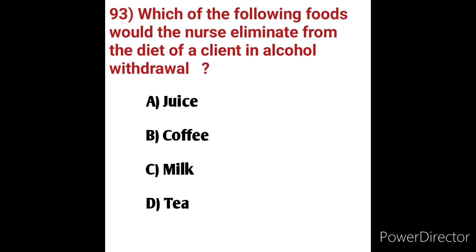Question 93: Which food would the nurse eliminate from the diet of a client in alcohol withdrawal? Options: A) juice, B) coffee, C) milk, D) tea. When alcohol is mixed with caffeine, caffeine can mask the depressive effects of alcohol. Regular coffee contains caffeine which acts as a psychomotor stimulant, leading to anxiety, agitation, tremors, and weakness. Option B, coffee, should be eliminated — it is the correct answer.